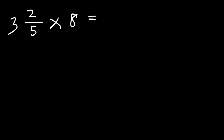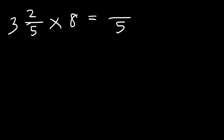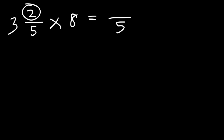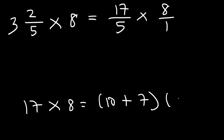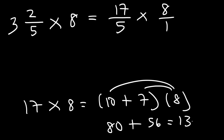Now let's multiply 3 and two-fifths by 8. Convert the mixed number to an improper fraction: 5 times 3 is 15, plus 2 is 17, so we have 17 over 5. Now multiply 17 times 8: think of 17 as 10 plus 7, so 10 times 8 is 80 and 8 times 7 is 56.